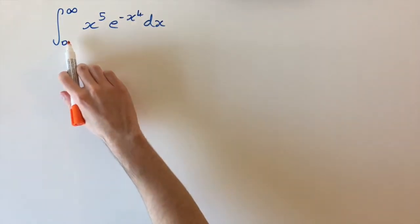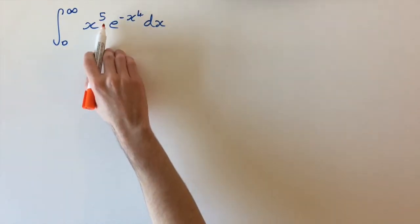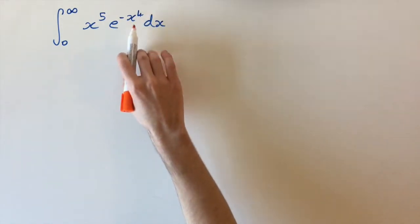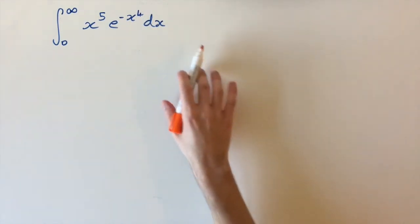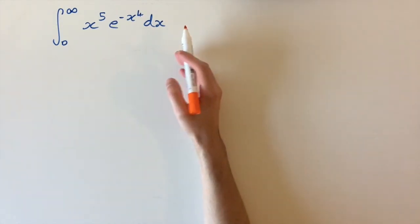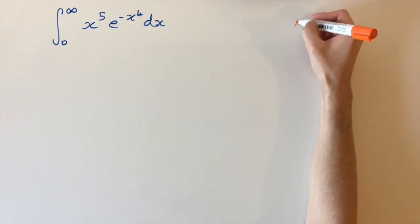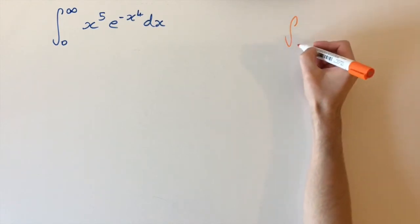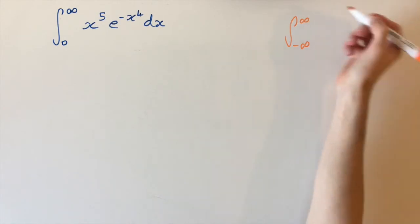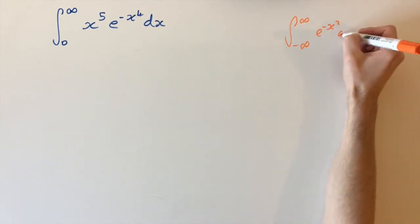We're looking at the integral between 0 and infinity of x to the power of 5 multiplied by e to the power of minus x to the power of 4, dx. The way we're going to solve this integral is by drawing a connection with another integral that we know how to solve — the famous Gaussian integral, which is the integral between minus infinity and infinity of e to the minus x squared dx.